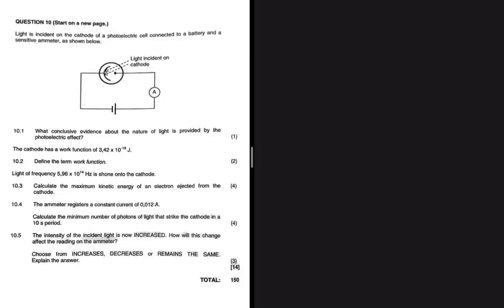Light is incident on the cathode of a photoelectric cell connected to a battery and a sensitive ammeter as shown below. Question 10.1 asks: what conclusive evidence about the nature of light is provided by the photoelectric effect? The photoelectric effect proves that light can act as a particle.